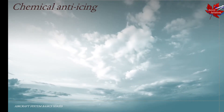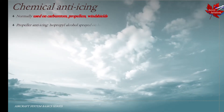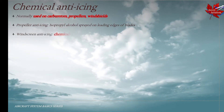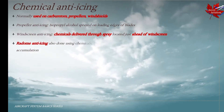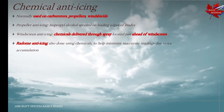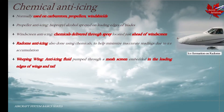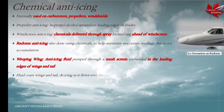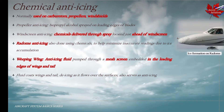Chemical anti-icing is another feature, normally used on carburetors, propellers, and windshields. For propeller anti-icing, isopropyl alcohol is sprayed on the leading edges of blades. Windscreen anti-icing is achieved by chemicals delivered through sprays located just ahead of the windscreen. Radome anti-icing is also done using chemicals to help minimize inaccurate readings of the weather radar due to ice accumulation on the radar. Weeping wing is another feature where anti-icing fluid is pumped through a mesh screen embedded in the leading edges of the wings and tail. The fluid coats the wings and tail, and as it flows over the surface it also serves as de-icing once the ice is disposed of.